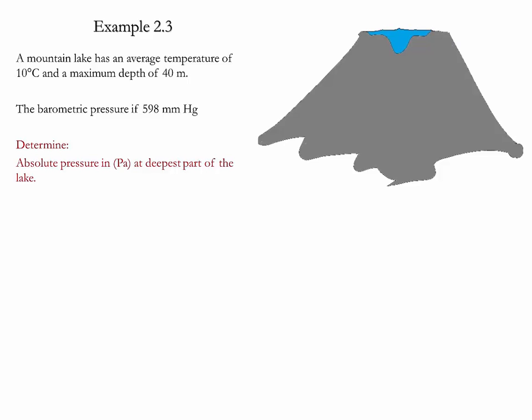The barometric pressure at that location is 598 millimeters of mercury. We need to determine the absolute pressure at the deepest part of the lake.